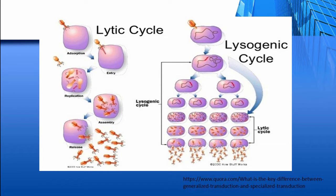Temperate phages undergo a lysogenic life cycle and do not harm the host bacterial cell. After entry into the host, the phage DNA integrates with the host bacterial chromosome in a non-infectious stage known as prophage, and replicates along with the bacterial chromosome. Such lysogenic phages mediate genetic recombination between bacteria by transduction.